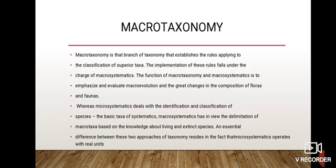Macro taxonomy is a branch of taxonomy that establishes the rules applying to the classification of superior taxa. The implementation of these rules falls under the charge of macrosystematics. The function of macro taxonomy and macrosystematics is to emphasize and evaluate macro evolution.